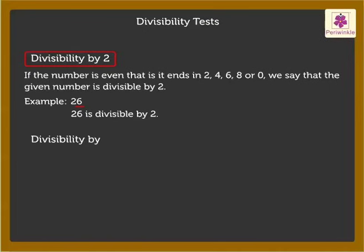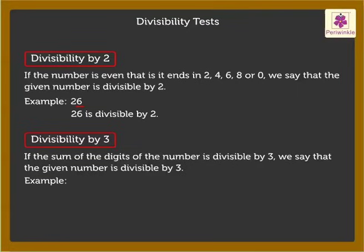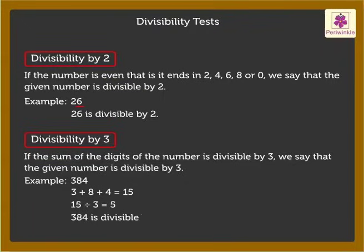Divisibility by 3: If the sum of the digits of the number is divisible by 3, we say that the given number is divisible by 3. For example, look at the number 384. When we add up all the digits, that is, 3 plus 8 plus 4, we get the sum as 15. We know that 15 is divisible by 3. Thus, we conclude that 384 is divisible by 3.